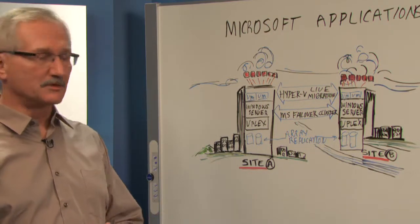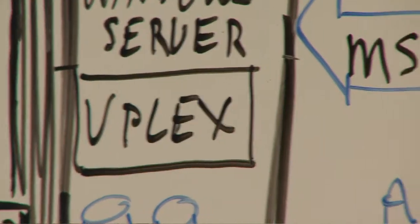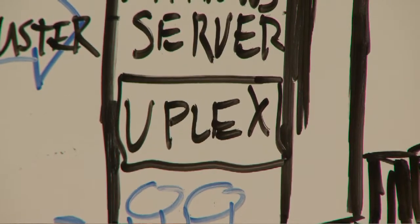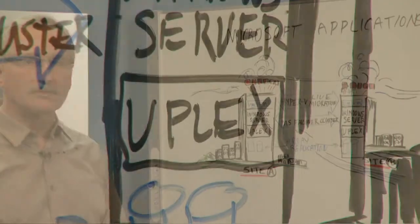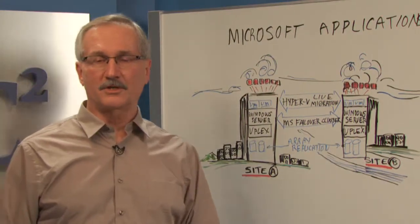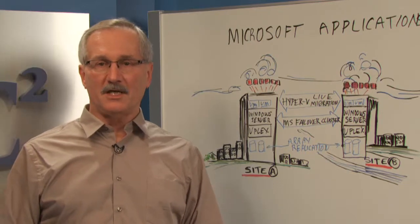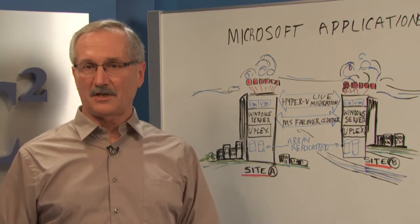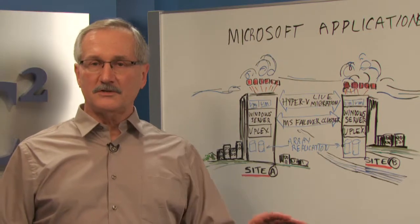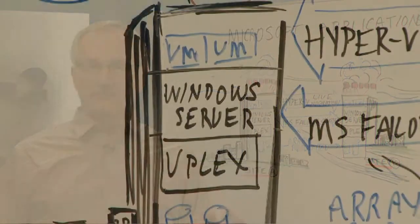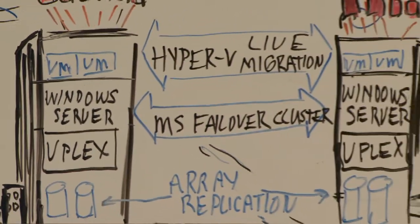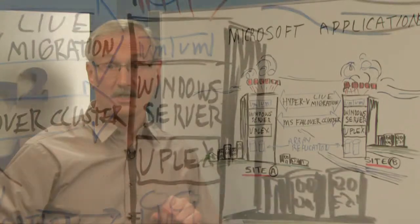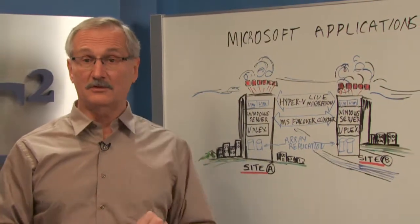Let's talk about adding VPLEX to the mix. You can see I have VPLEX now inside these array infrastructures. What VPLEX allows you to do is a really cool trick — it allows you to have the very same data, read-write accessible, in two different places at the very same time. So across these sites, any data that's read and written by the hosts is going to automatically appear on the other side. VPLEX is basically taking that cluster and stretching it across so that data is always in sync.